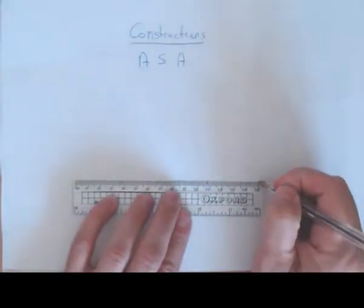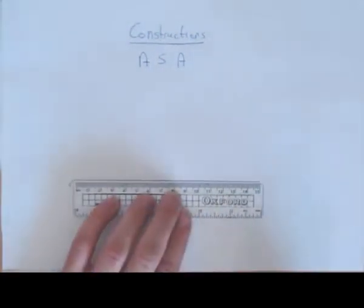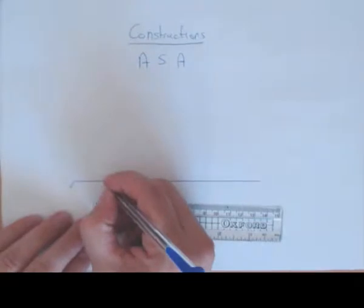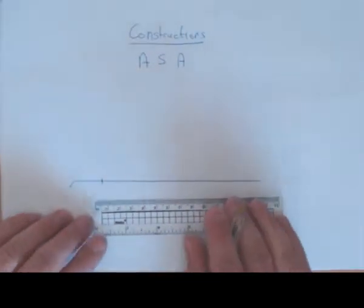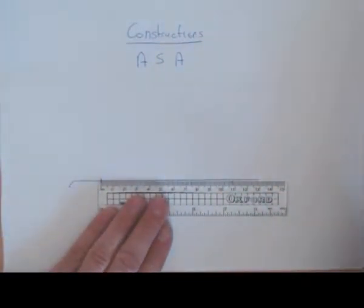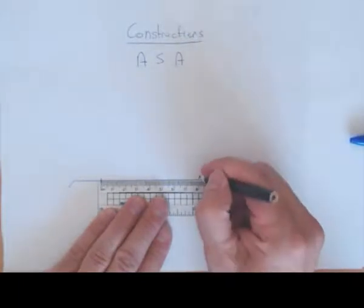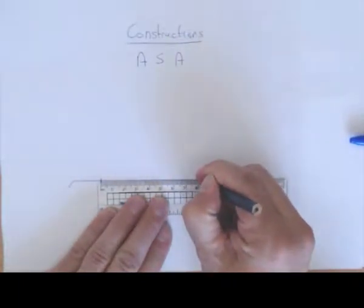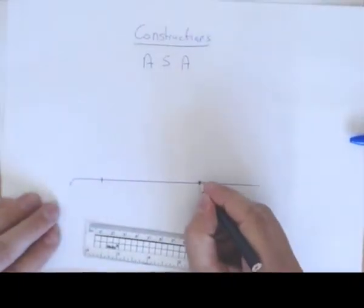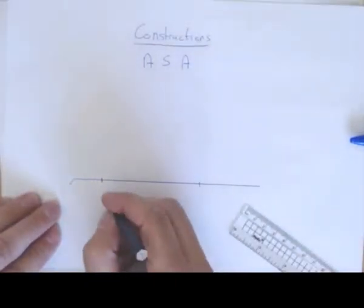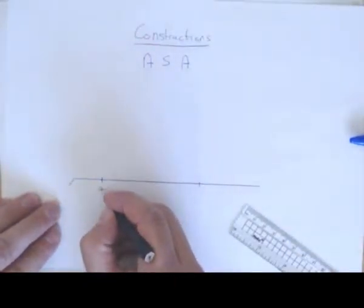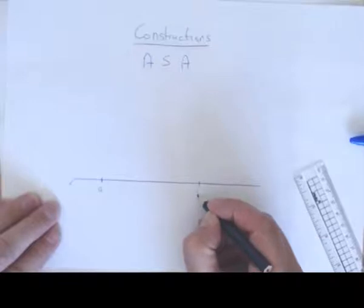For example, you're going to be asked to draw a line segment that is eight centimeters long. So we're going to pick a point here on the left, measure out exactly eight centimeters. That's a line segment exactly eight centimeters long. We're going to label this point A and this point B.